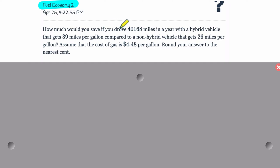So it says here, how much would you save if you drove this far? So 40,168 miles in a year with a hybrid vehicle that gets 39 miles per gallon compared to a non-hybrid vehicle that gets 26 miles per gallon. And here it is. Assume that the cost of gas is $4.48 per gallon. Round your answer to the nearest cent.